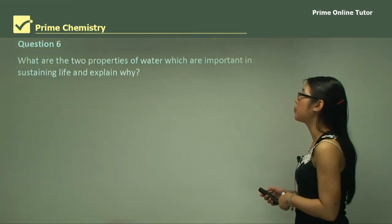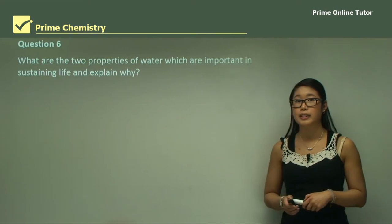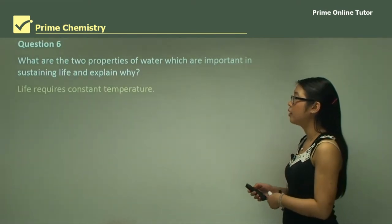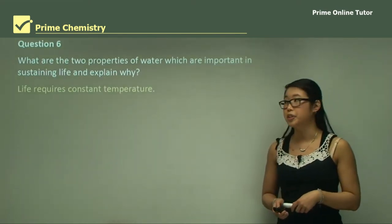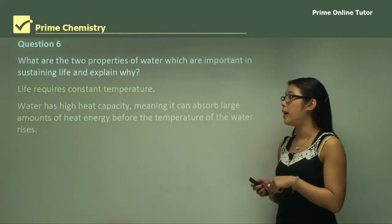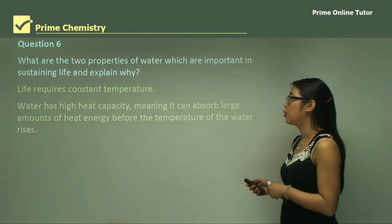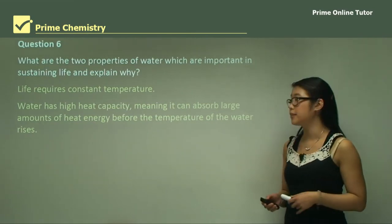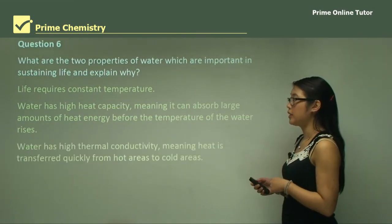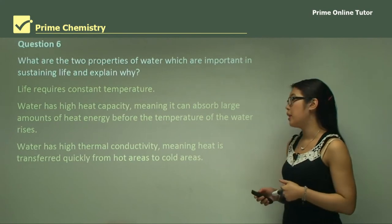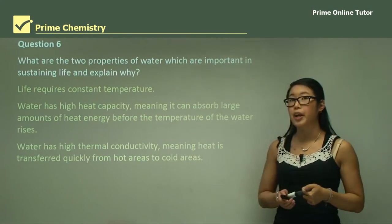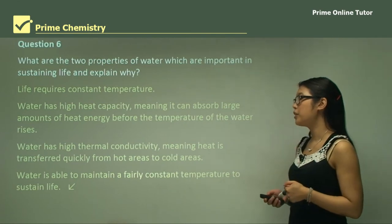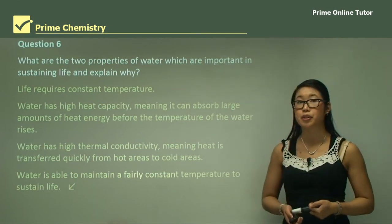Question 6: What are the two properties of water which are important in sustaining life, and why? Life requires a constant temperature. Water has high heat capacity, meaning it can absorb large amounts of heat energy before its temperature changes or rises. Water has high thermal conductivity, meaning heat is transferred quickly from hot areas to cooler areas. Therefore, water is able to maintain a fairly constant temperature to sustain life.